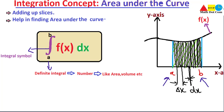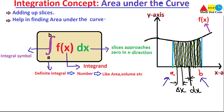Next comes the function f(x), which is called the integrand. The integrand is the function to be integrated — the function whose area under the curve we are going to find. Then comes dx. As already defined in the diagram, dx represents the smallest slice of the area under the curve, approaching zero in the x-direction, so that we can have a more accurate area.